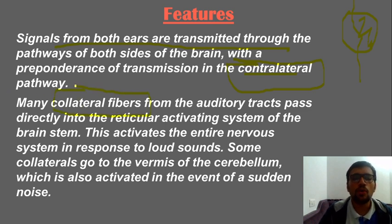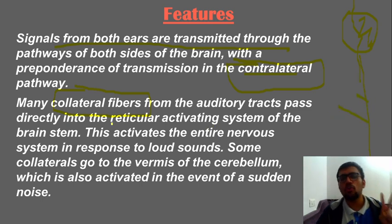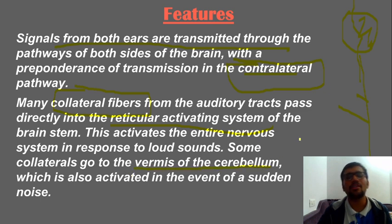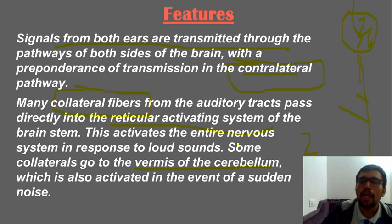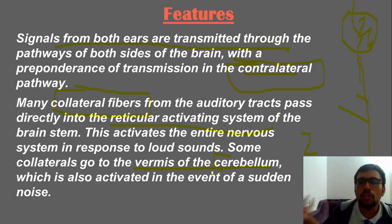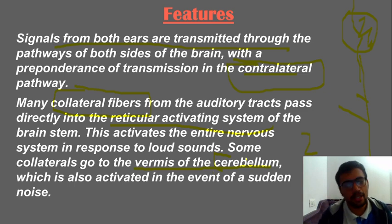The second feature is collateral fibers. As the auditory tract passes, it gives collaterals to two important structures: the reticular activating system (RAS) and the vermis of the cerebellum. This is why the RAS has an arousal function — a sudden loud sound activates it, making you alert. The vermis of the cerebellum is responsible for postural changes in response to a sudden loud noise, for example when a dog barks and you need to react and run.